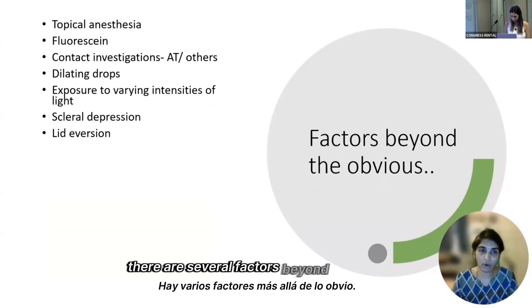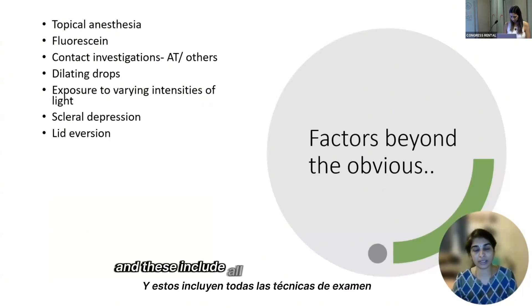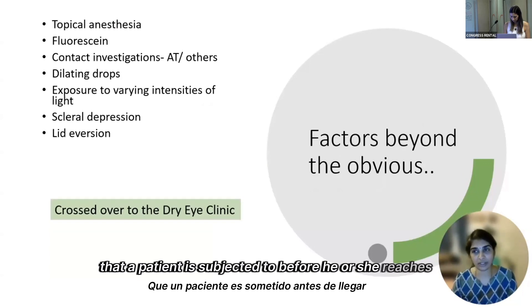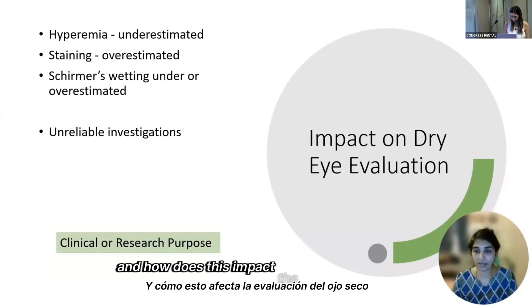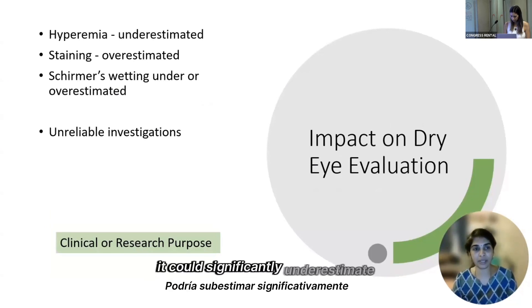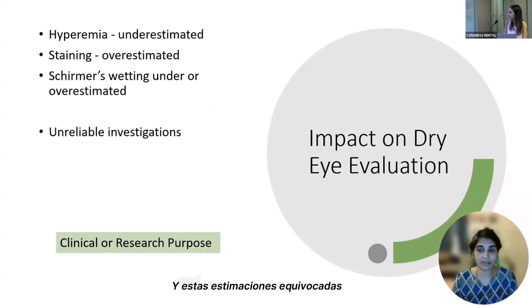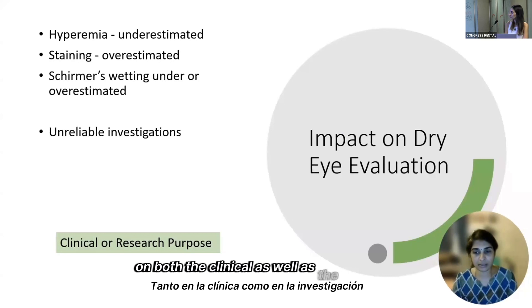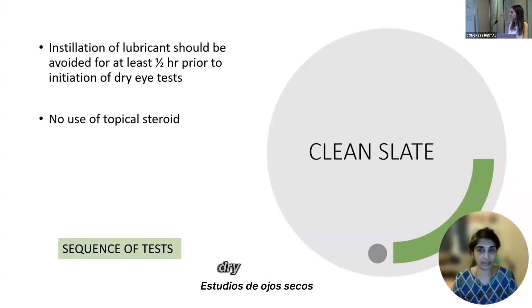There are several factors beyond the obvious which affect the process of dry eye evaluation. These include all the examination techniques a patient is subjected to before reaching the dry eye clinic, which could significantly underestimate or overestimate the signs of dry eye. These wrong estimations have an impact on both the clinical as well as the research needs of dry eye studies.